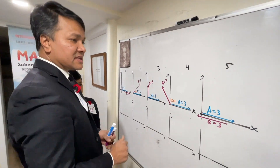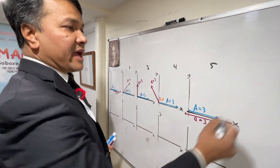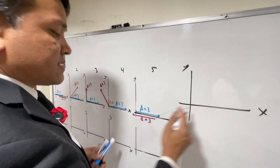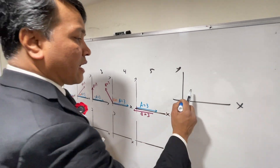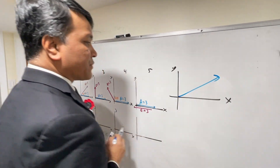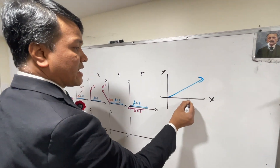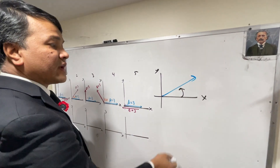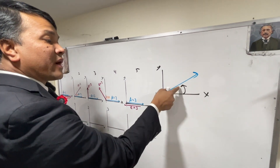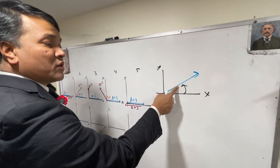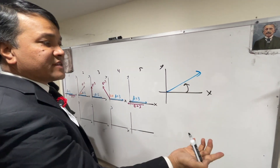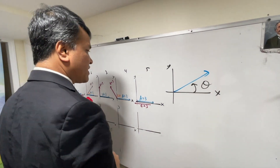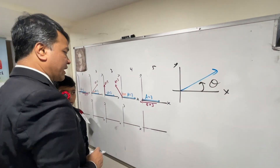And how do you measure the angle again? You have X and Y axes, and let's say you have a vector. You come to the X-axis and go counterclockwise. Once you hit the blue vector, that's your angle — you call it theta. That's the convention for measuring angles.